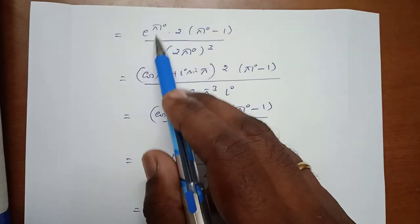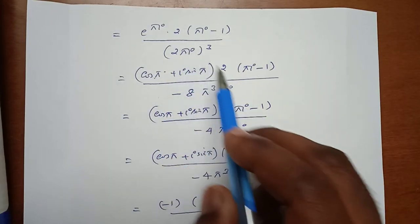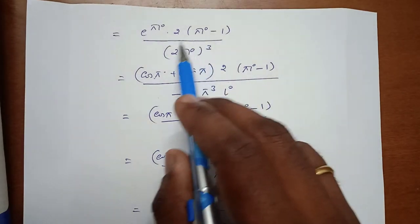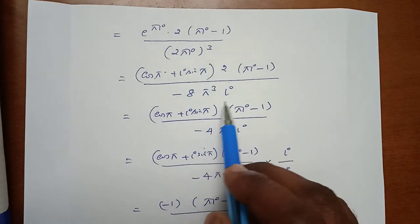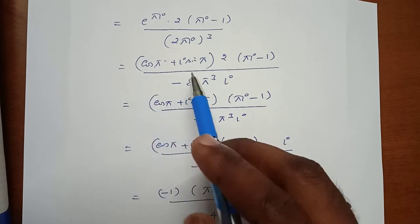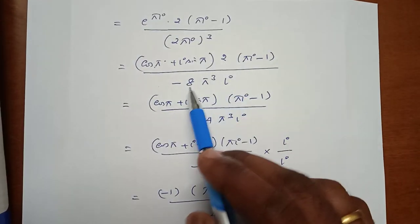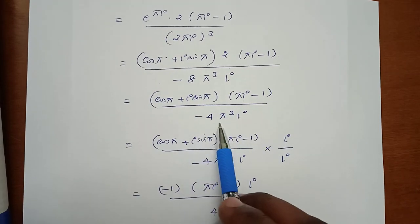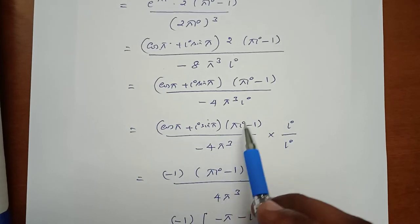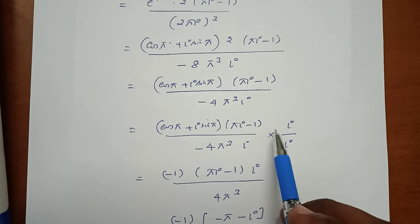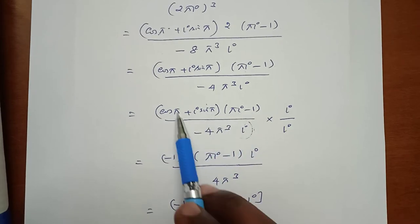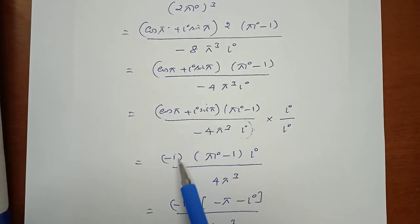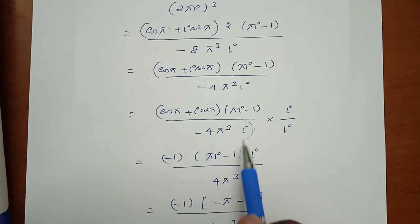Using Euler's formula, e^(πi) = cos π + i sin π = −1. So the expression becomes (cos π + i sin π)(πi − 1) / (−4π³i). Multiplying numerator and denominator by i to rationalize: cos 180° = −1, sin 180° = 0, so −1 · (πi − 1) · i / (−4π³ · i²). Since i² = −1, the denominator becomes 4π³.